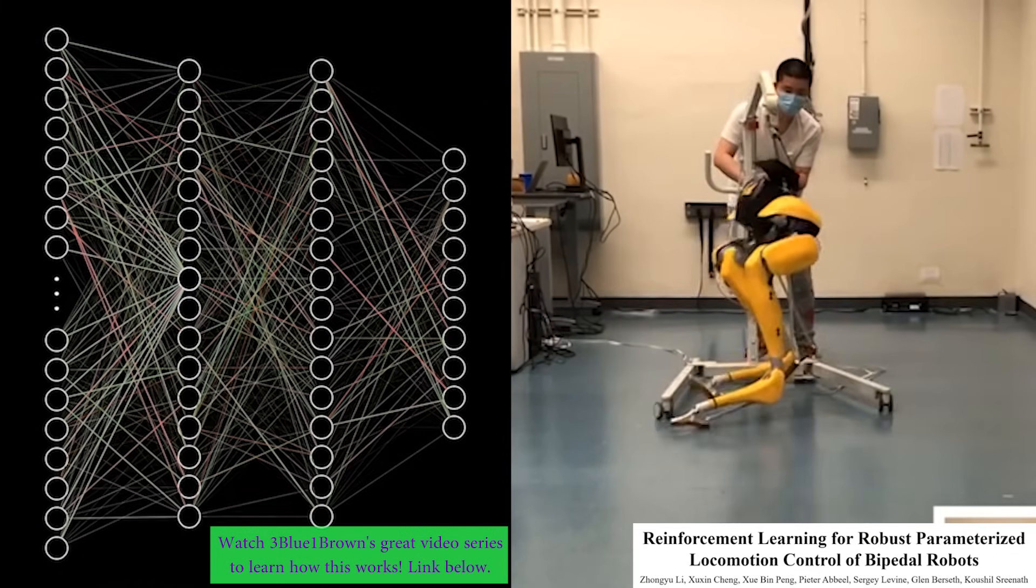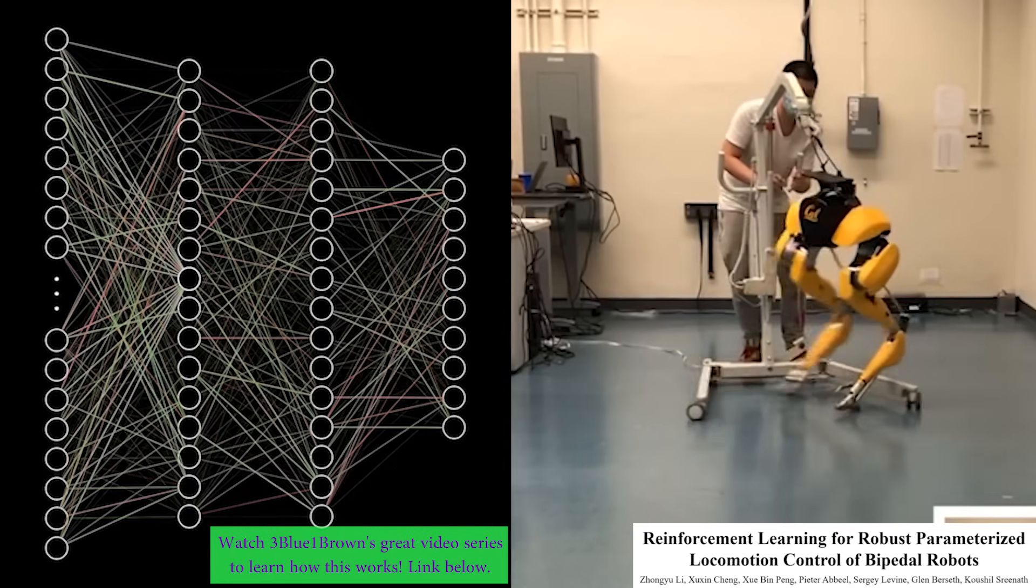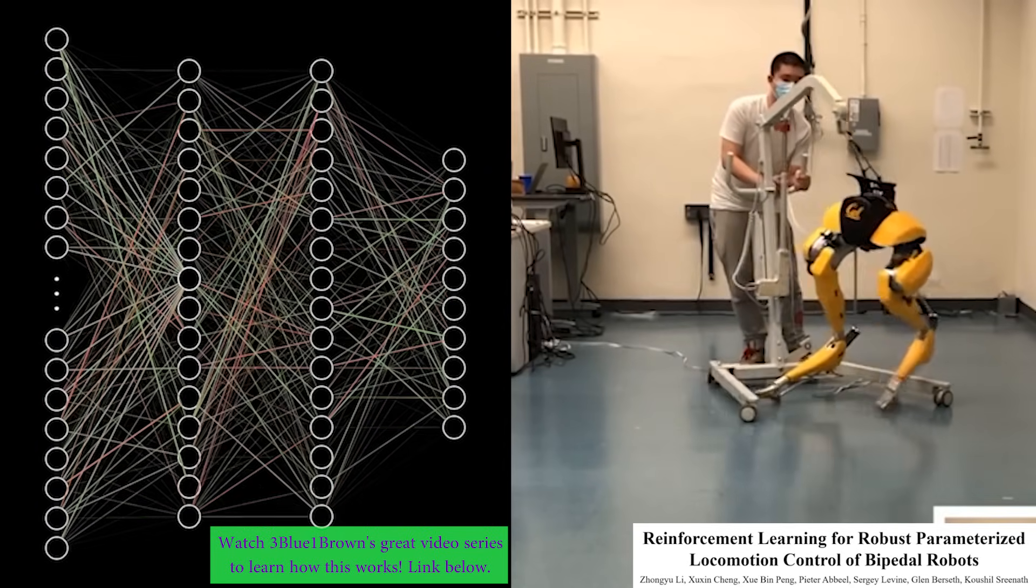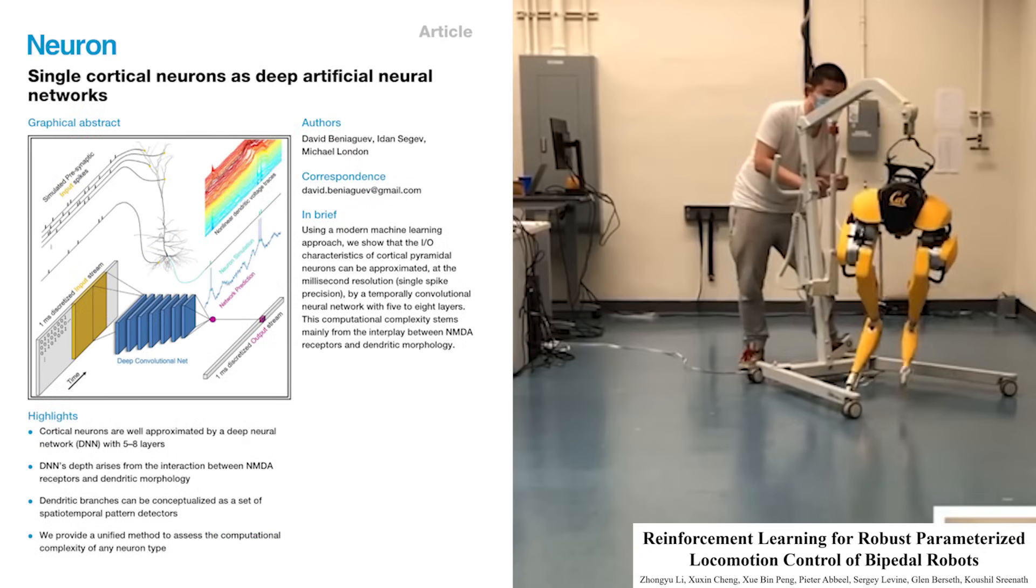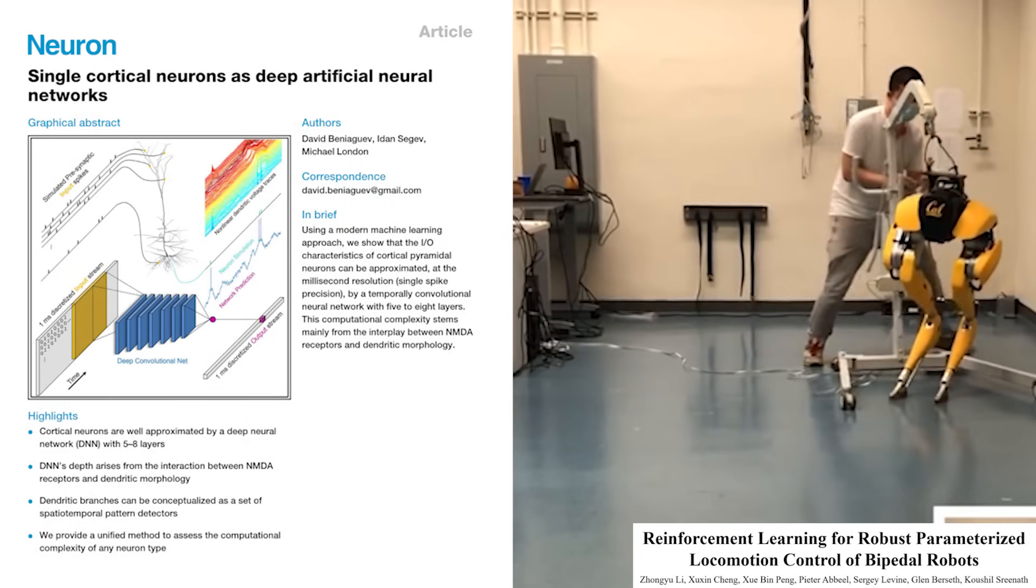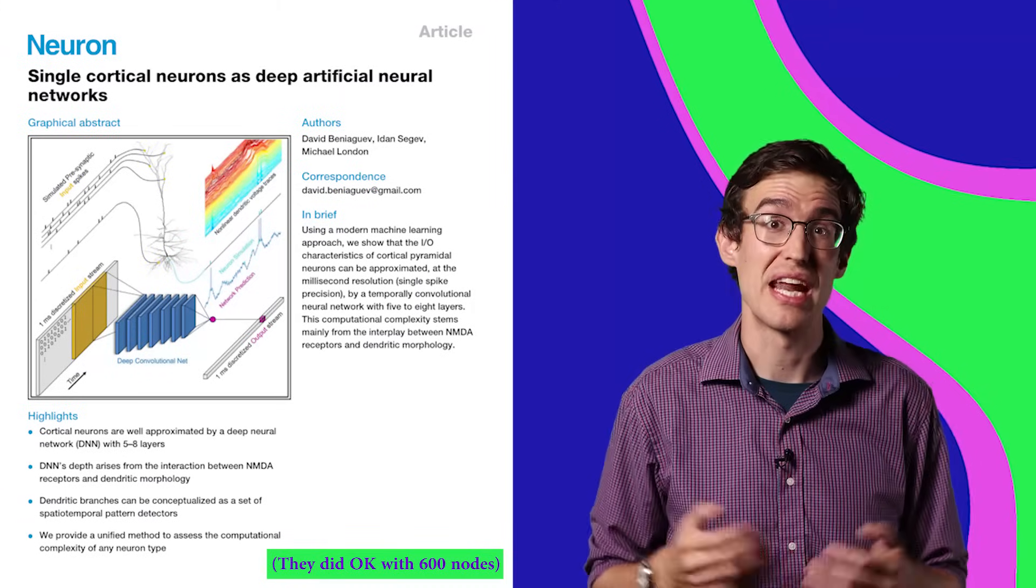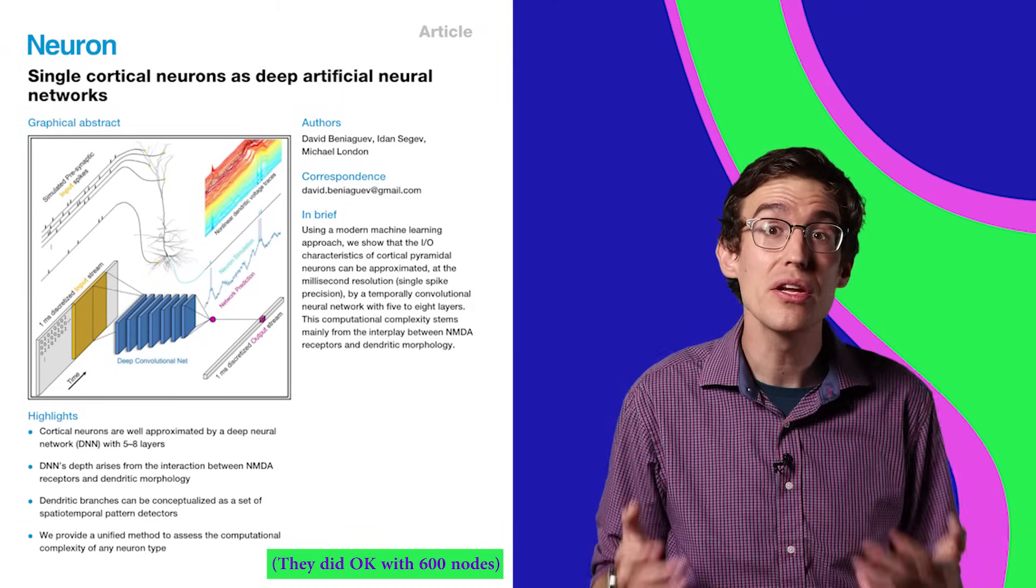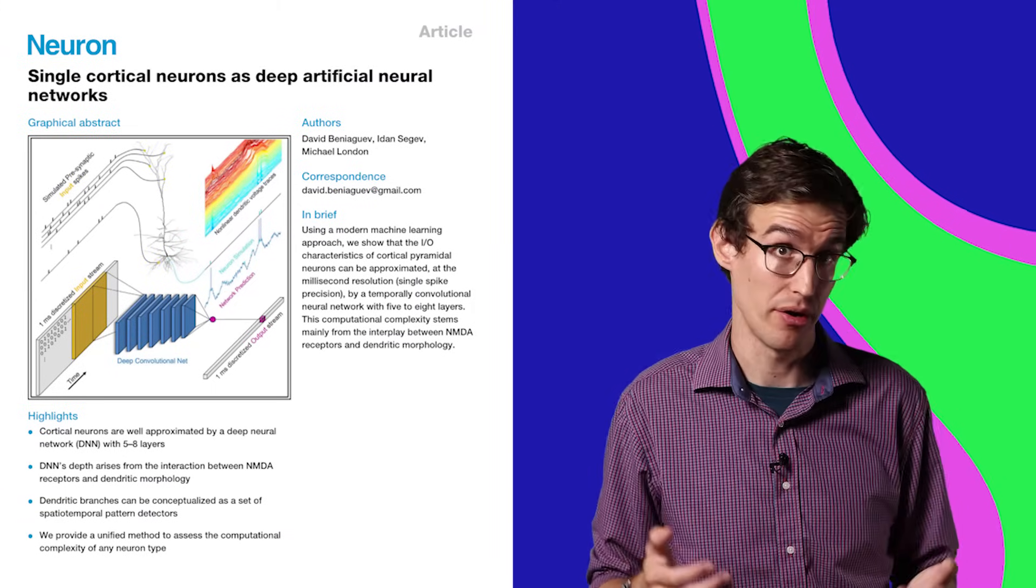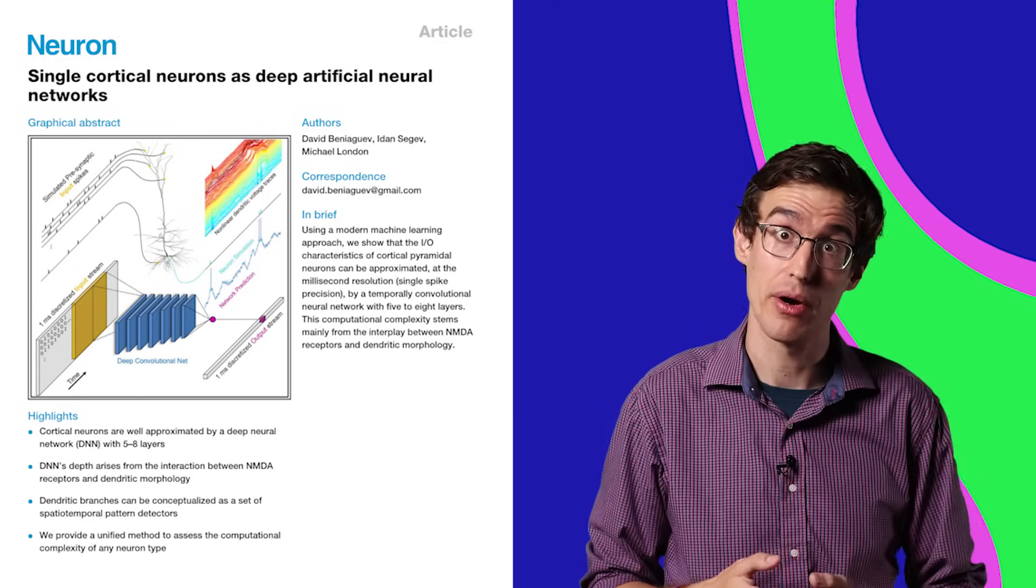AI wishes it was made of neurons, but neurons are way more complex than we understand. To model a single cortical neuron, these researchers needed a deep neural net with up to 2000 nodes. The current generation of organoids can have something on the order of a million neurons, and they're getting bigger. So that's a lot of computing power.